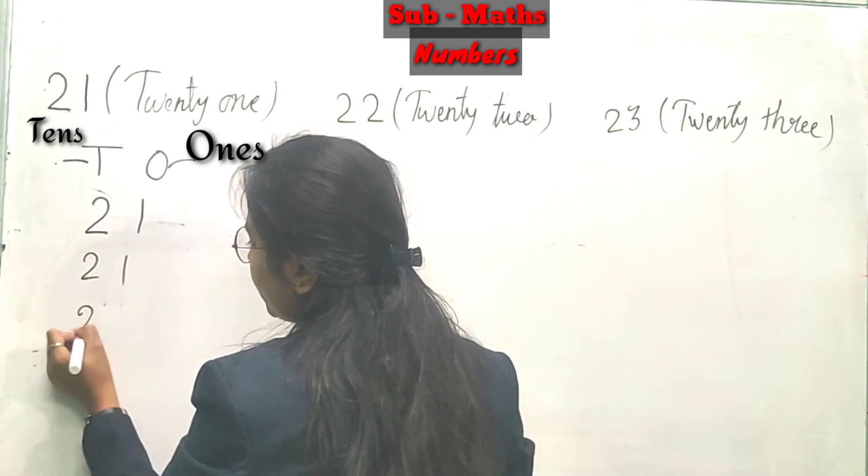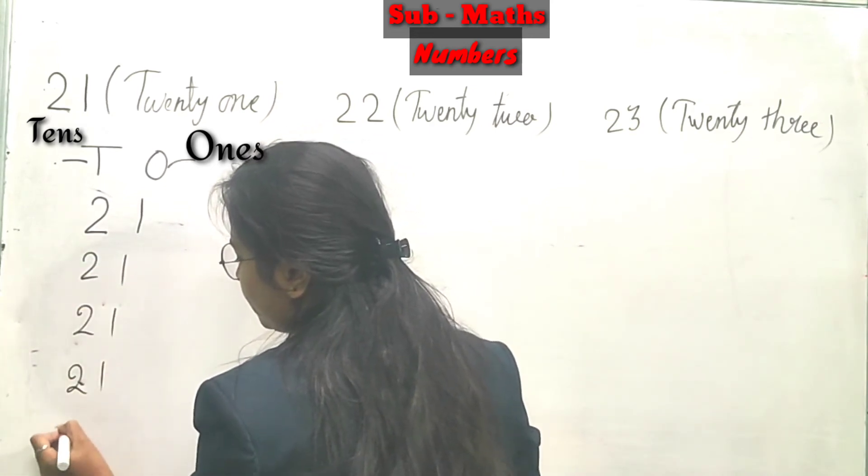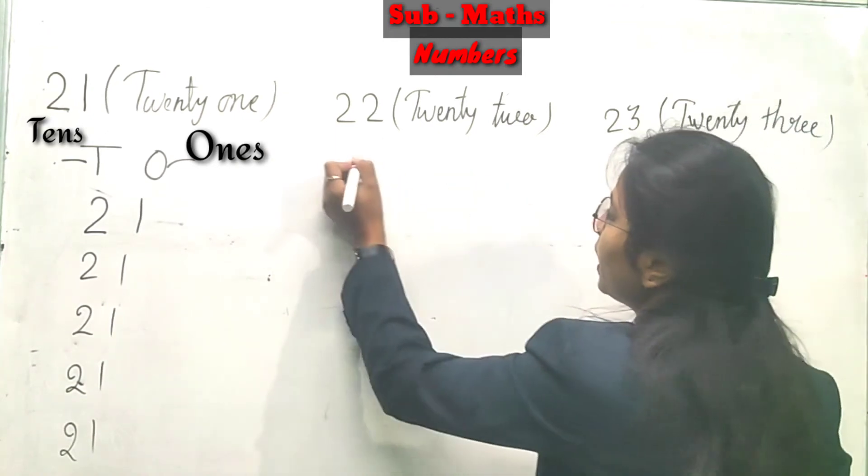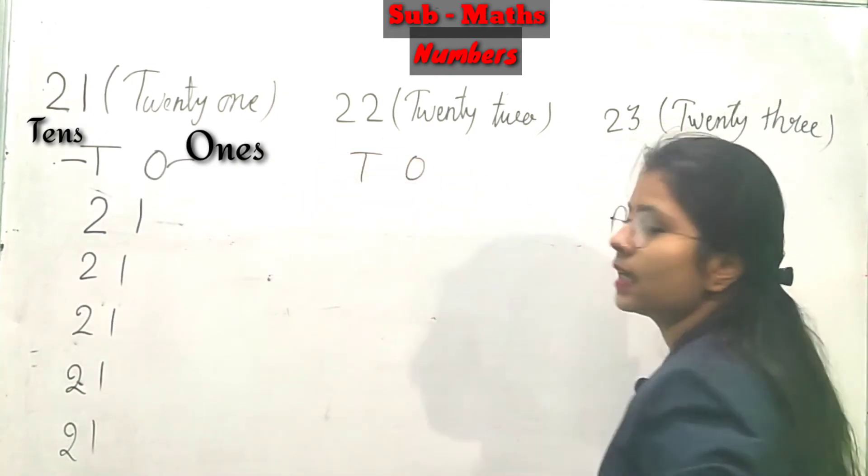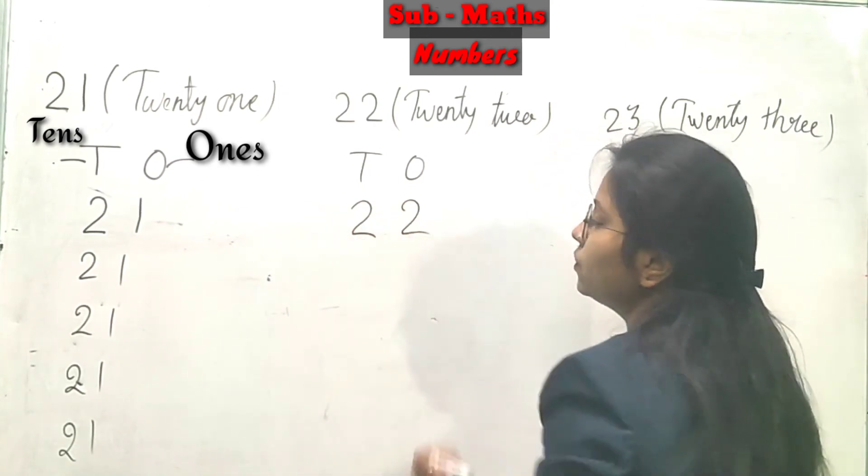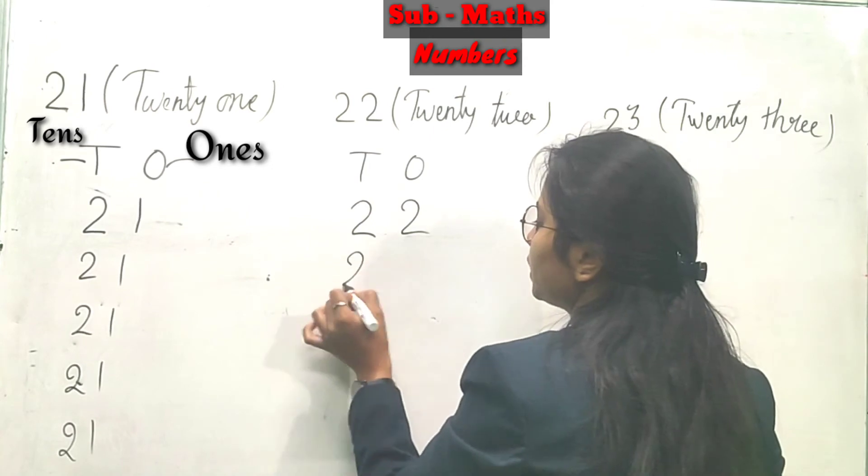Haam aise write karen ge. Next 22 diya huwa hai, to tens and ones same. Isi tariqe se haam ko karna hai - 2 tens mein and 2 ones mein. 22.